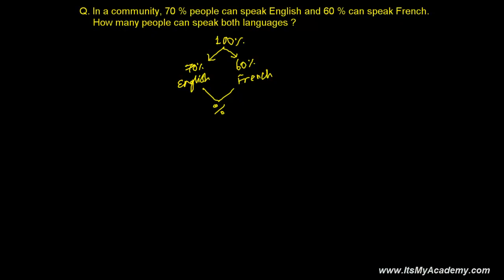So to solve that, we need to use the cardinal number of union of sets that we had recently learned in a previous video. I'm assuming total number of people speaking English, number of people speaking English, I'm representing by N(E). E represents English. Is how much? 70%.